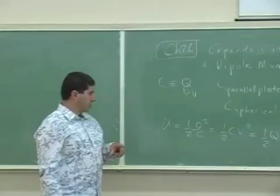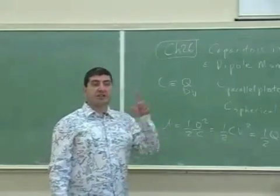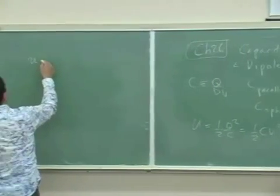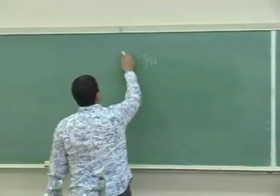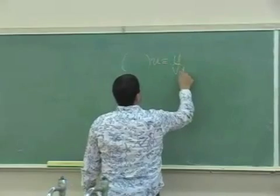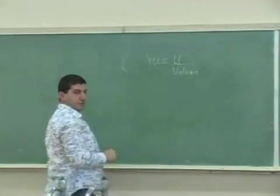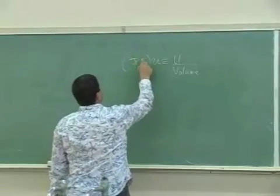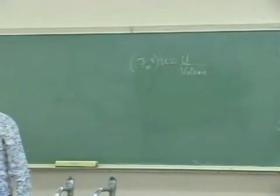One other thing that we didn't mention is what's known as energy density. It's a little u, energy density, and its units are energy divided by volume, joules per meter cubed.